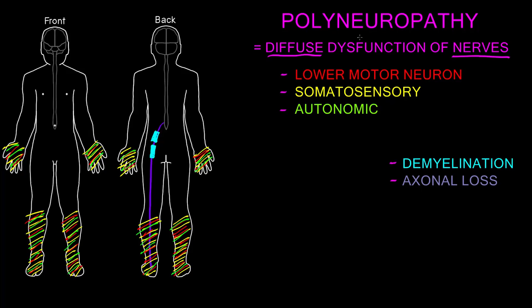Polyneuropathy can be caused by many types of pathology and many types of disorders, including genetic, idiopathic, autoimmune, metabolic, nutritional, and toxic disorders.